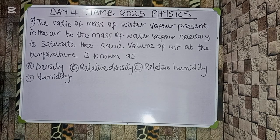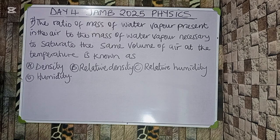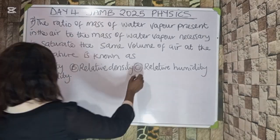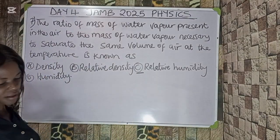Question seven: the ratio of the mass of water vapor present in the air to the mass of water vapor necessary to saturate the same volume of air at that temperature is called what? Options: (A) density, (B) relative density, (C) relative humidity, (D) humidity. The correct option is C — relative humidity.